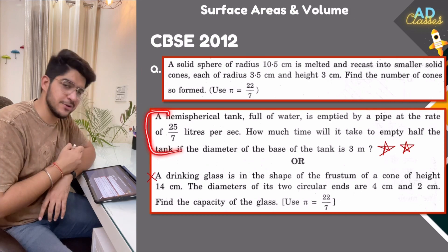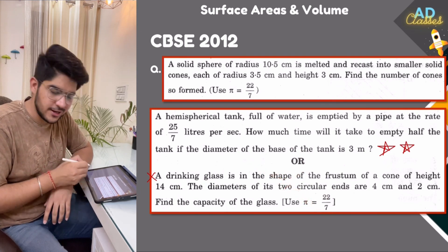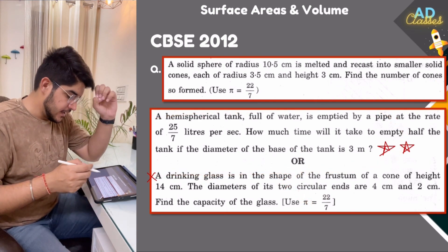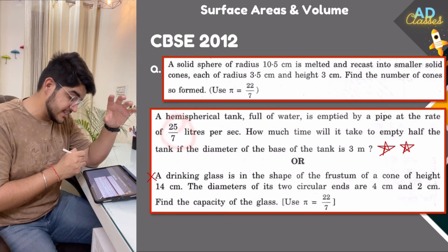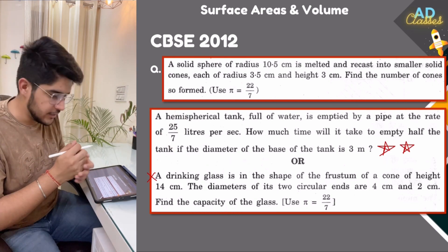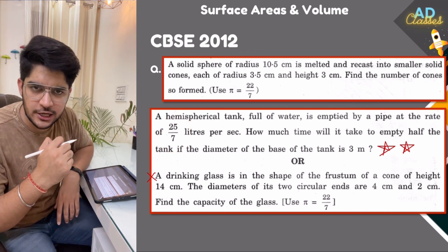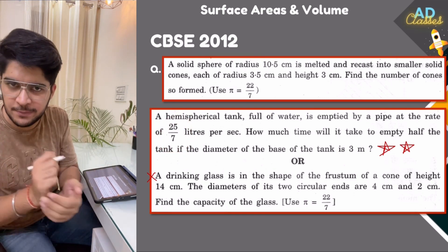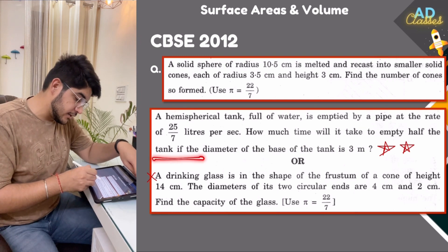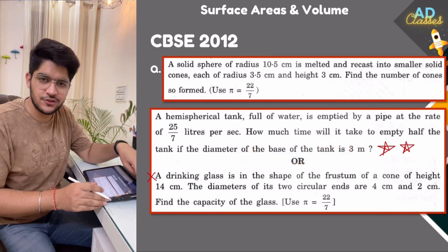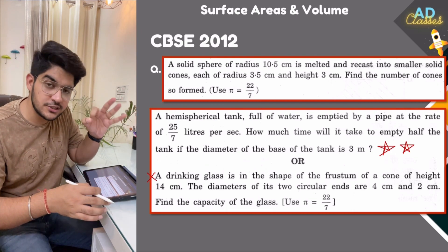This is a double-star question from 2022 Term 2. A hemispherical tank full of water is emptied by a pipe at the rate of 25/7 litres per second. You have a hemispherical tank filled with water being emptied at that rate. How much time will it take to empty the tank if the diameter of the base of the tank is given? This is a volume-based problem and is very important for you.